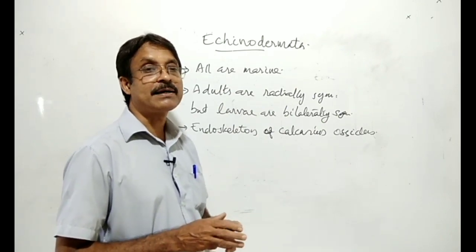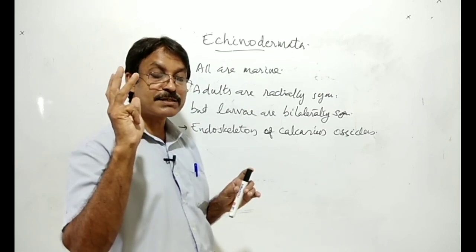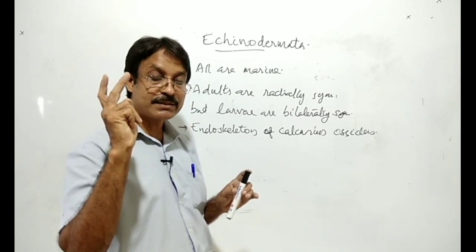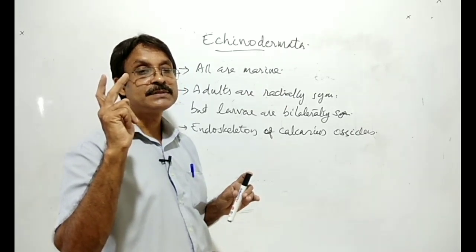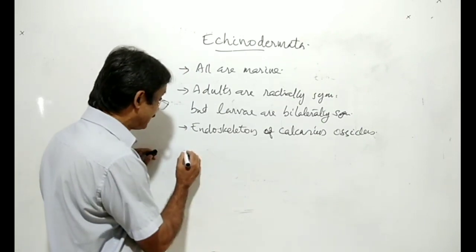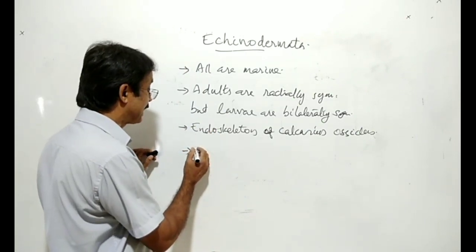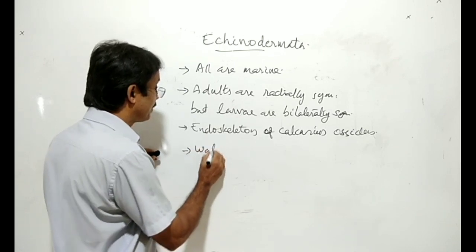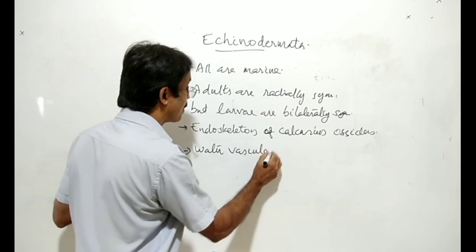The important characters of Echinodermata are: completely marine, larva bilaterally symmetric but adults radially symmetric, they have an endoskeleton of calcareous ossicles. Then another very important feature of echinoderms is that they have a water vascular system.